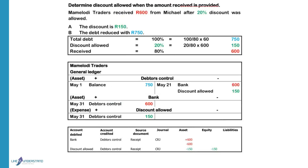Mammaloti Traders received R600 from Michael after 20% discount was allowed. If he paid the total debt he would pay 100%. A discount of 20% was allowed, so we actually received 80% from him. They give us the amount received as R600, so the 80% that we receive equals R600.